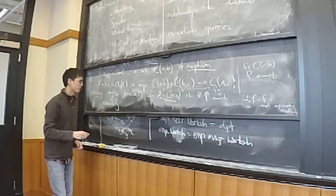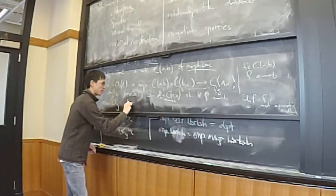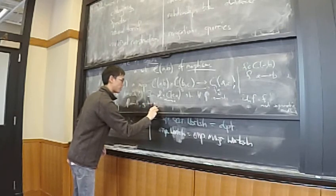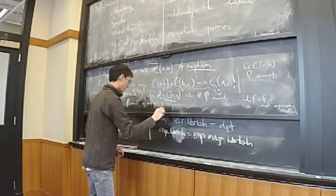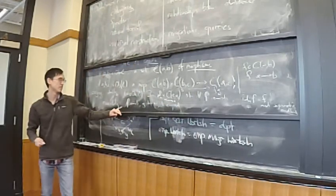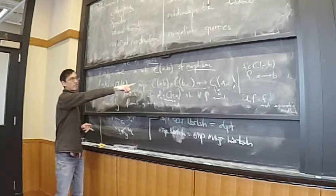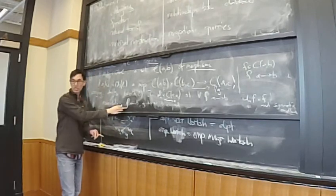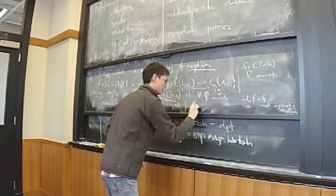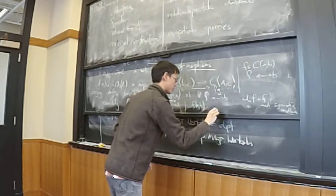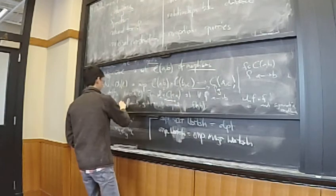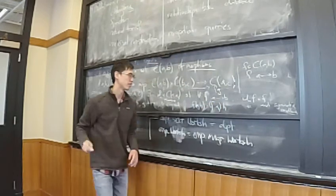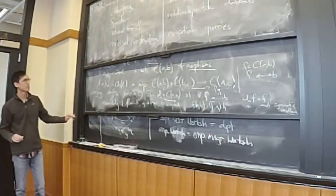The associativity law says: if we have a map F from A to B, a map G from B to C, and a map H from C to D, then it doesn't matter how we compose them pairwise. We can create F·G and then compose with H, or create G·H and compose with F. The result is the same: F·G·H equals F·G·H. That is an abstract definition.